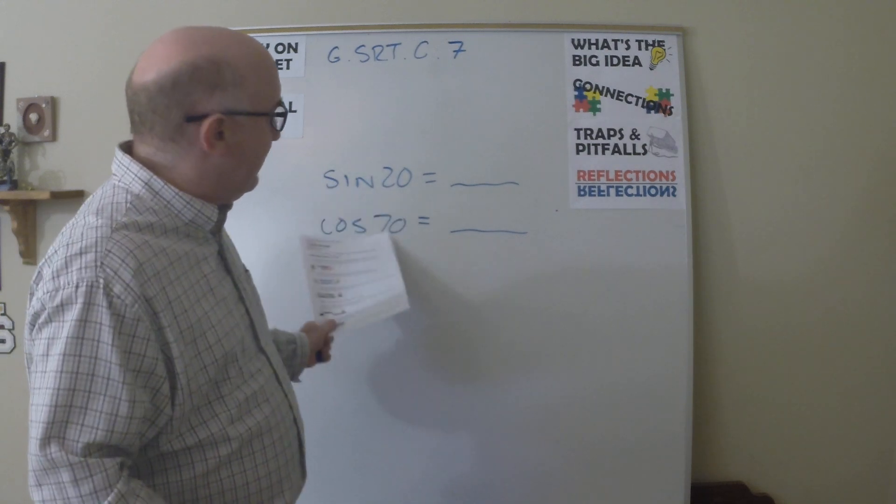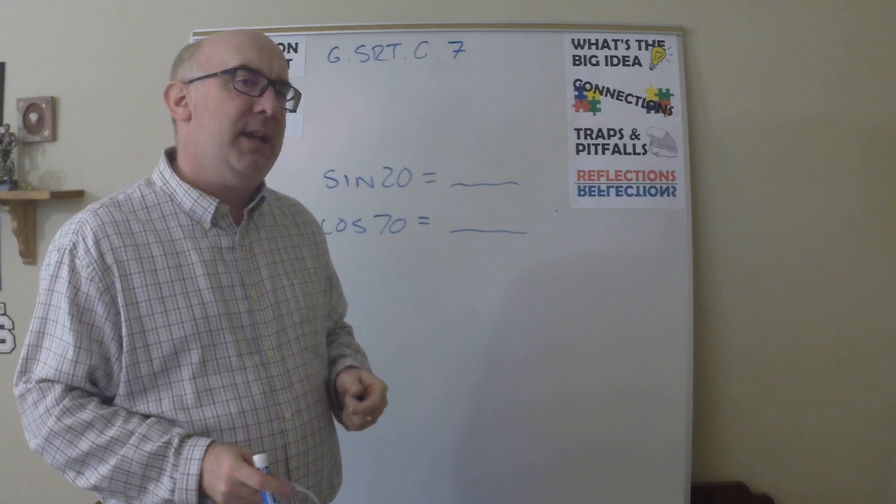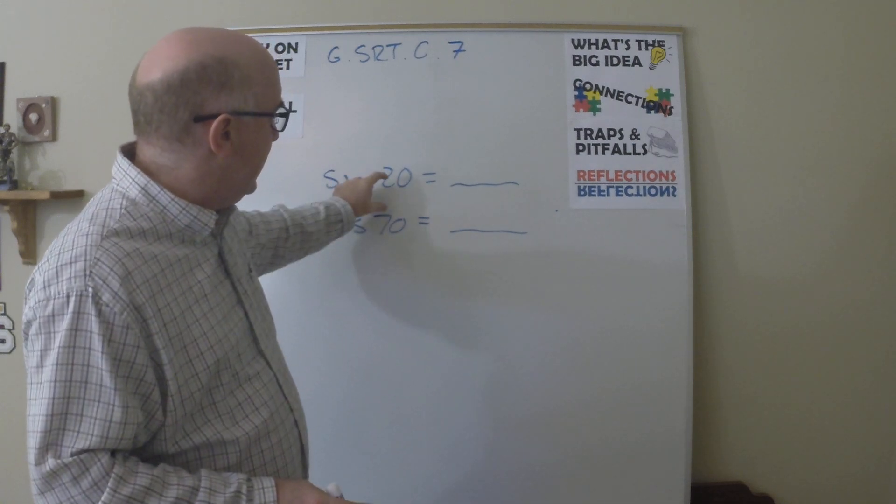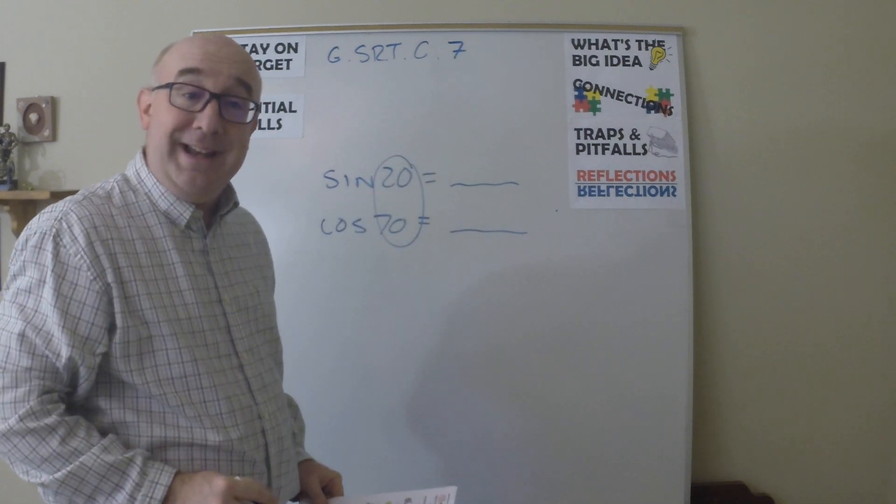I tend to use numbers that are very easy to pick from so they can see when I say, why is this happening? Or what is the pattern? And they notice that they sum to 90 here.